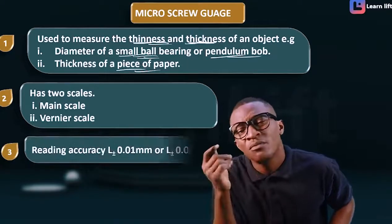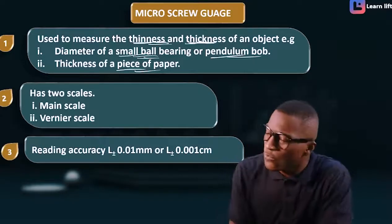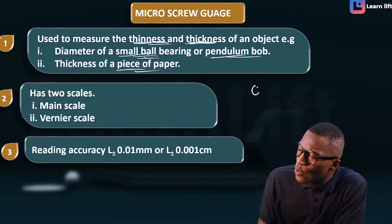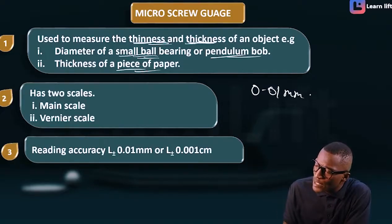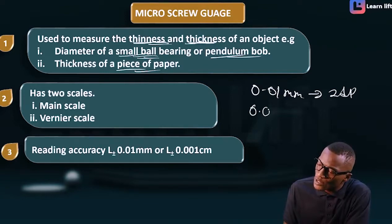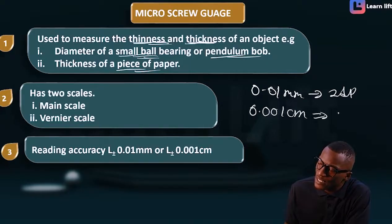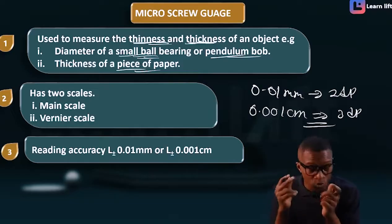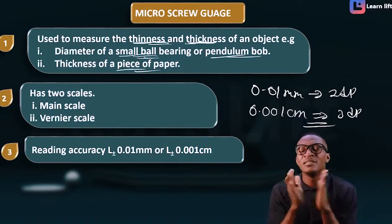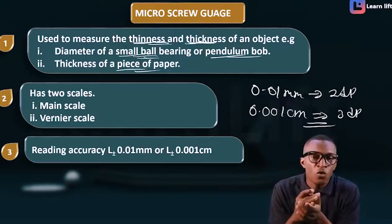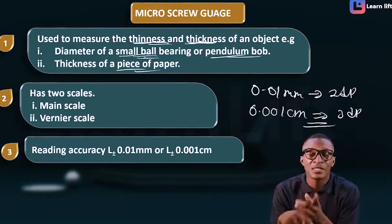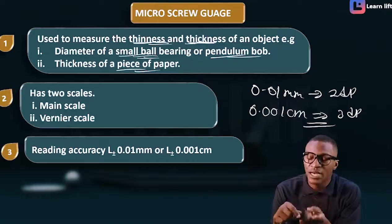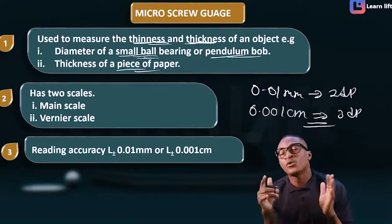Number three: take note that it has a reading accuracy of 0.01 millimeter — that is two decimal places in millimeter. In centimeter it is 0.001 centimeter — three decimal places. Don't confuse it with the vernier caliper: for the vernier caliper, in millimeter it is one decimal place and in centimeter it is two decimal places.